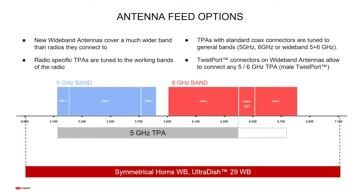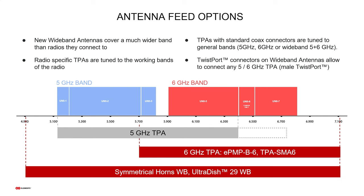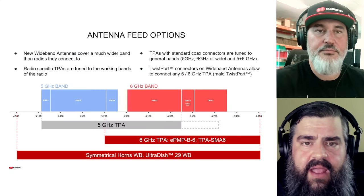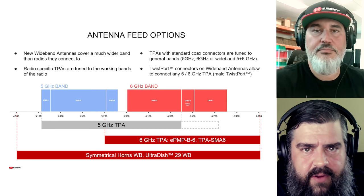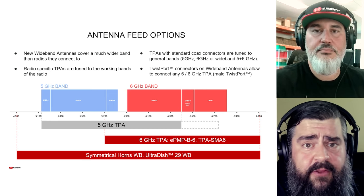With the new wideband antennas you have a few feed options: existing twist port adapters work from lower 5 GHz up to about 6.4 GHz; new twist port adapters — the ePMP B6 and TPA SMA6 — are for 6 GHz operation and work from 5.7 to 7.1 GHz. The antennas are wideband covering the whole band, while the adapters are band-specific. Depending on how things go in the future, there could be many different potential new options, so interoperability considerations are more important than before.